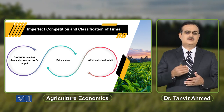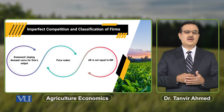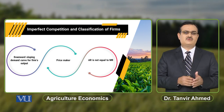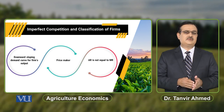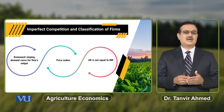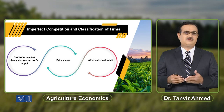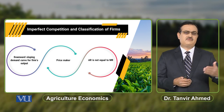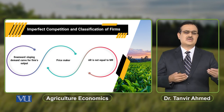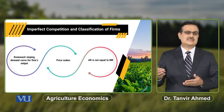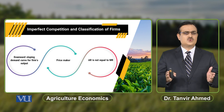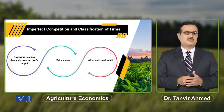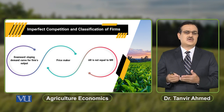Under perfectly competitive market, the demand curve faced by a particular firm is perfectly elastic — it is parallel to the horizontal axis. But under imperfectly competitive market, the producer faces a downward sloping demand curve. Another difference: under perfectly competitive market, firms are price takers — a particular firm has no control over the price prevailing in the market. But under imperfectly competitive market, producers or firms are price makers — they can control the prices of the output they sell in the market. Also, in imperfectly competitive market, the average revenue of the firm is not equal to marginal revenue, whereas in perfectly competitive market, average revenue and marginal revenue are both equal.